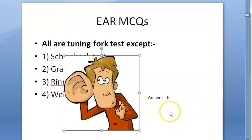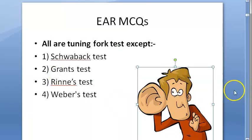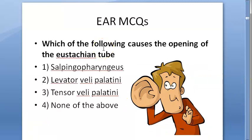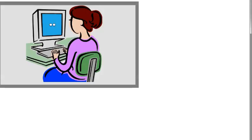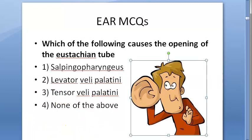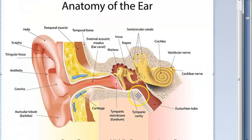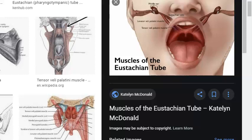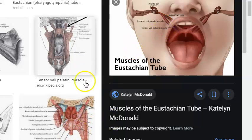Next question: which of the following causes the opening of the Eustachian tube? The answer is C, tensor veli palatini. Let us look at the muscle — this is the Eustachian tube, and the muscle that makes it open is tensor veli palatini. It runs from the palate. Do not get confused with tensor tympani — the muscle that opens the Eustachian tube is tensor veli palatini.